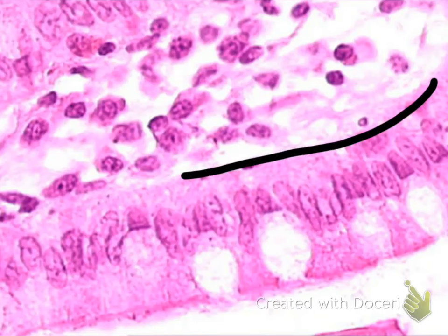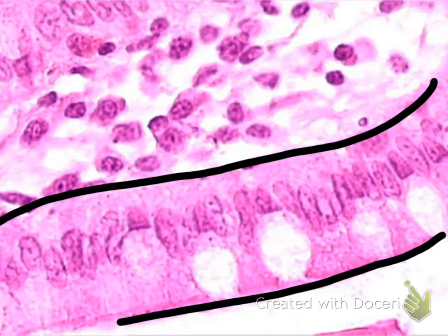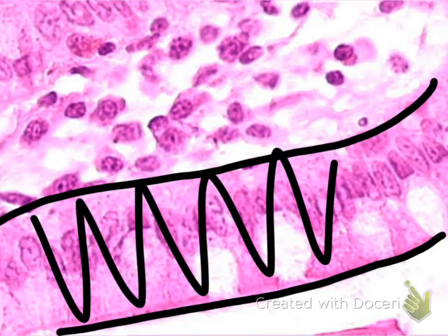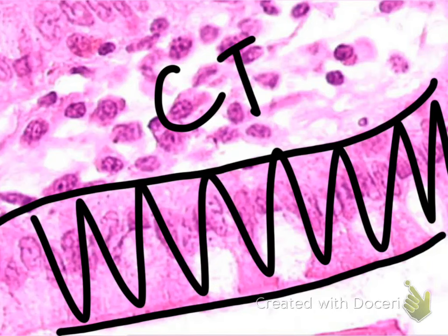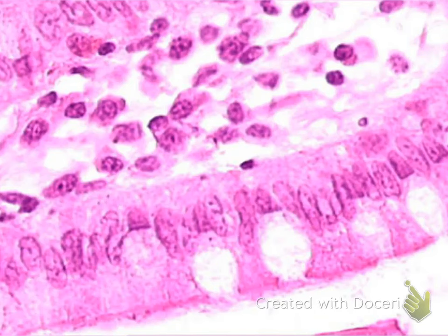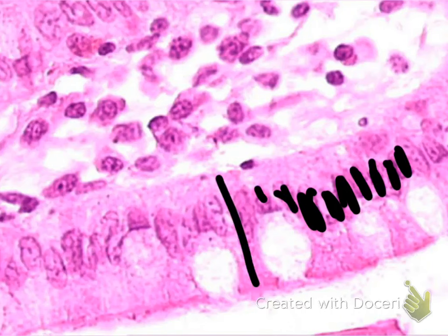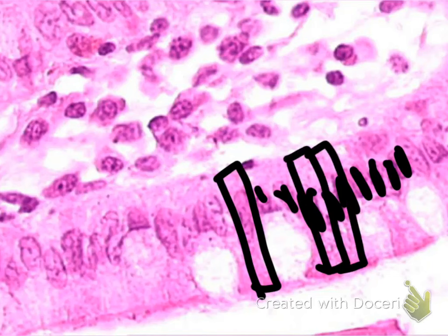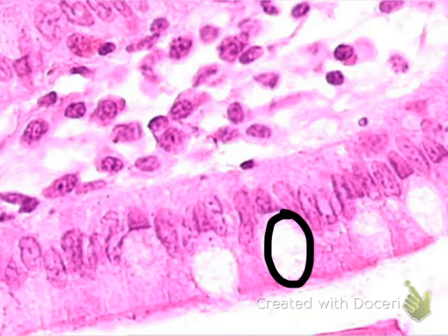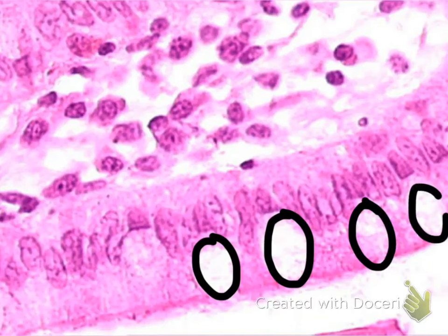Basement membrane connecting the epithelium to the connective tissue. Your apical surface is not attached to anything, so this here is your epithelial tissue and this is your connective tissue. Notice that the shape of the nuclei are tall and lined up toward the basement membrane, which means the shape of the cell is rectangular. One row of rectangular shaped cells — this is your simple columnar. These white structures, because we're looking at a columnar cell, are your goblet cells, which produce mucus.